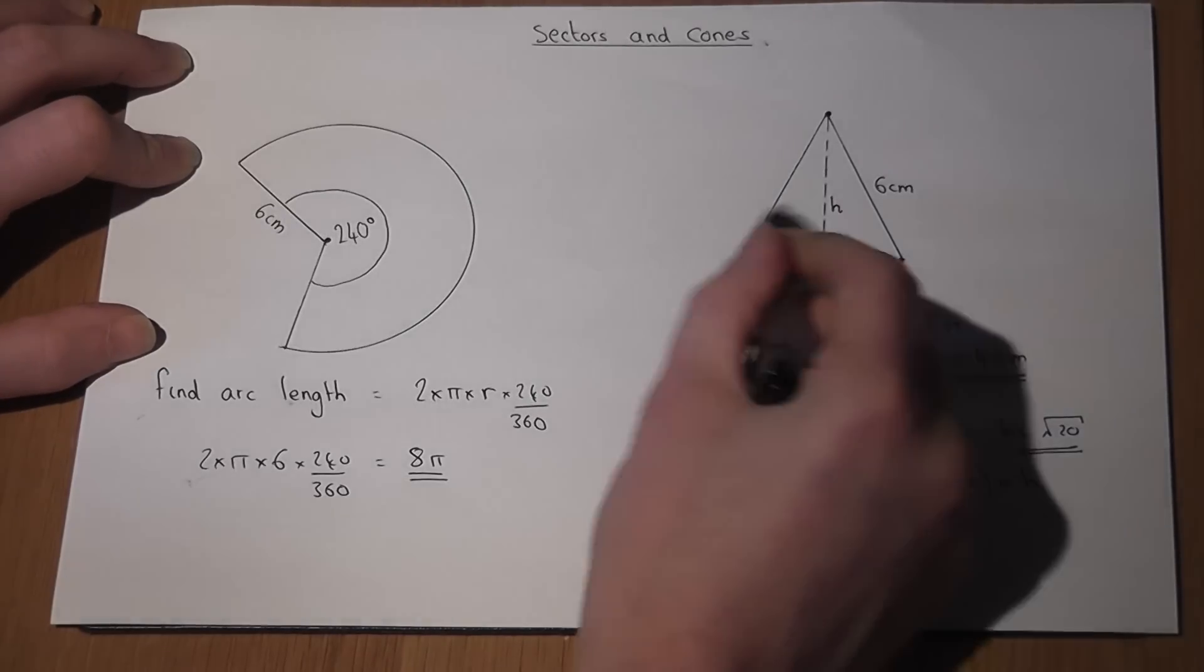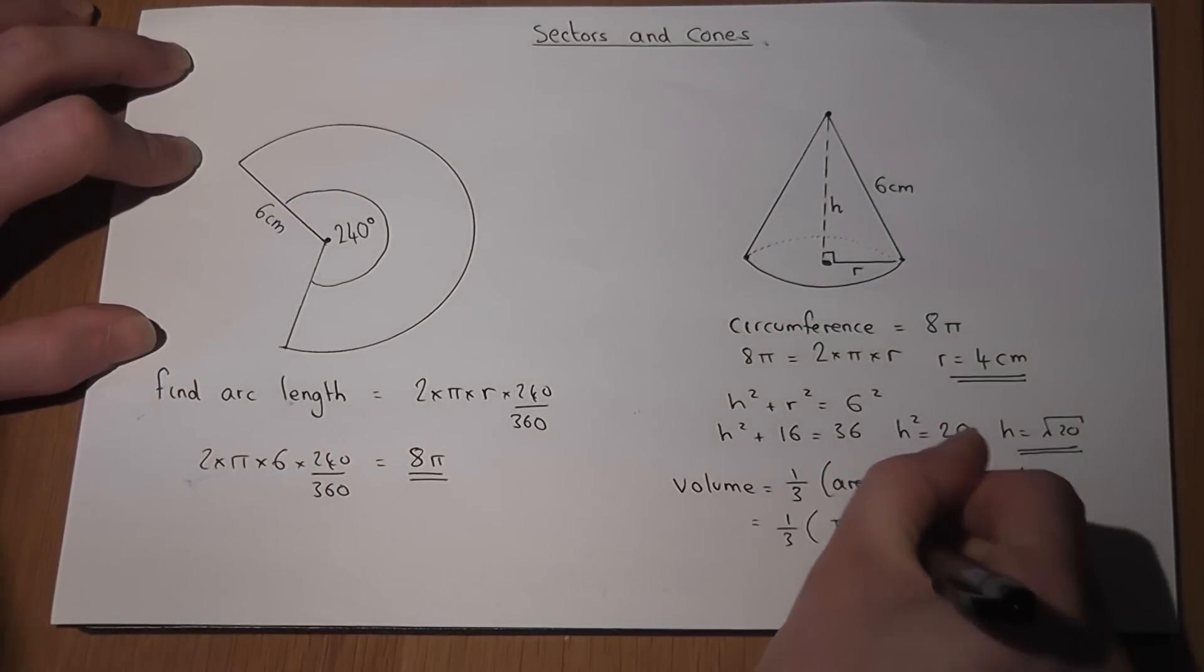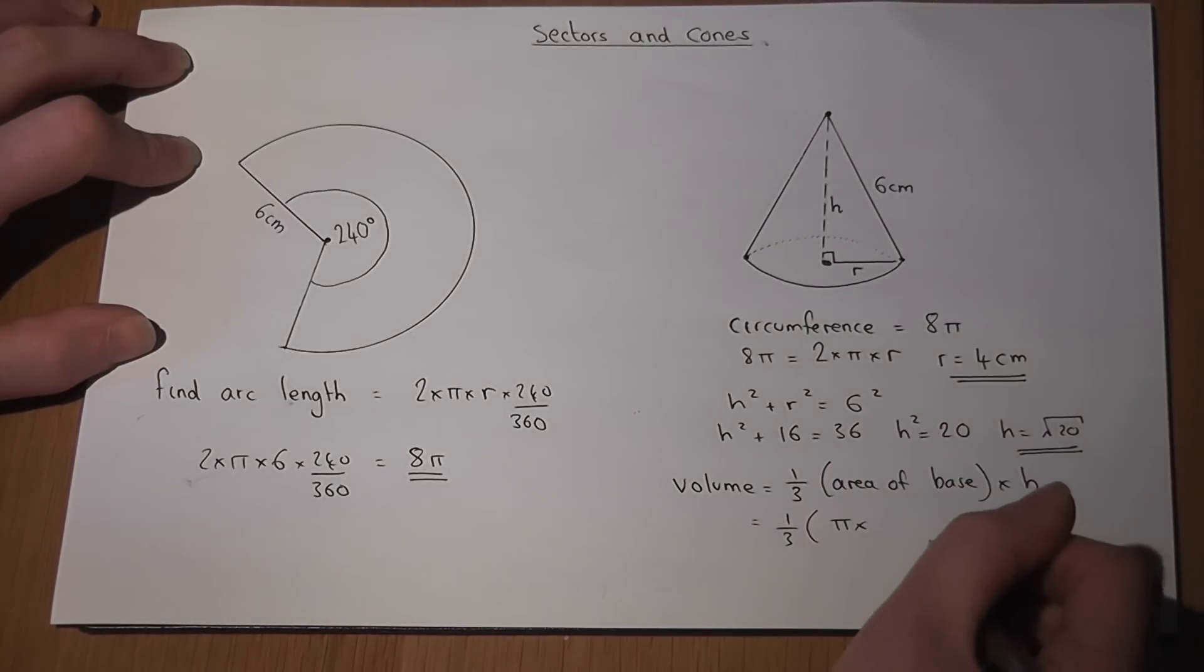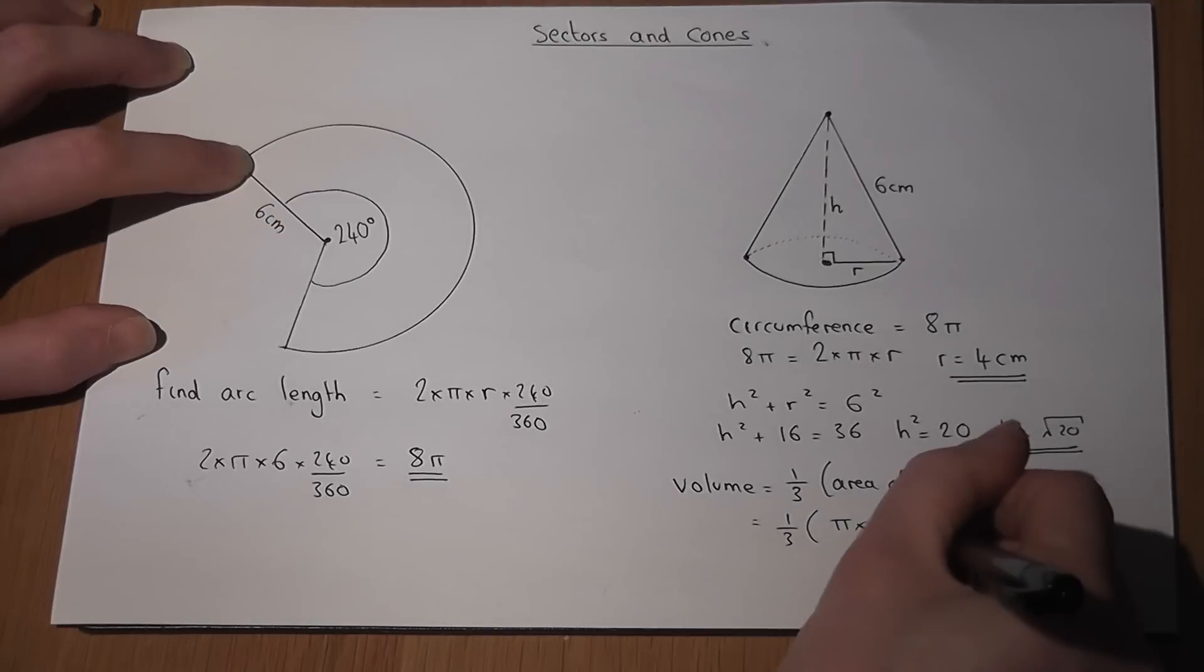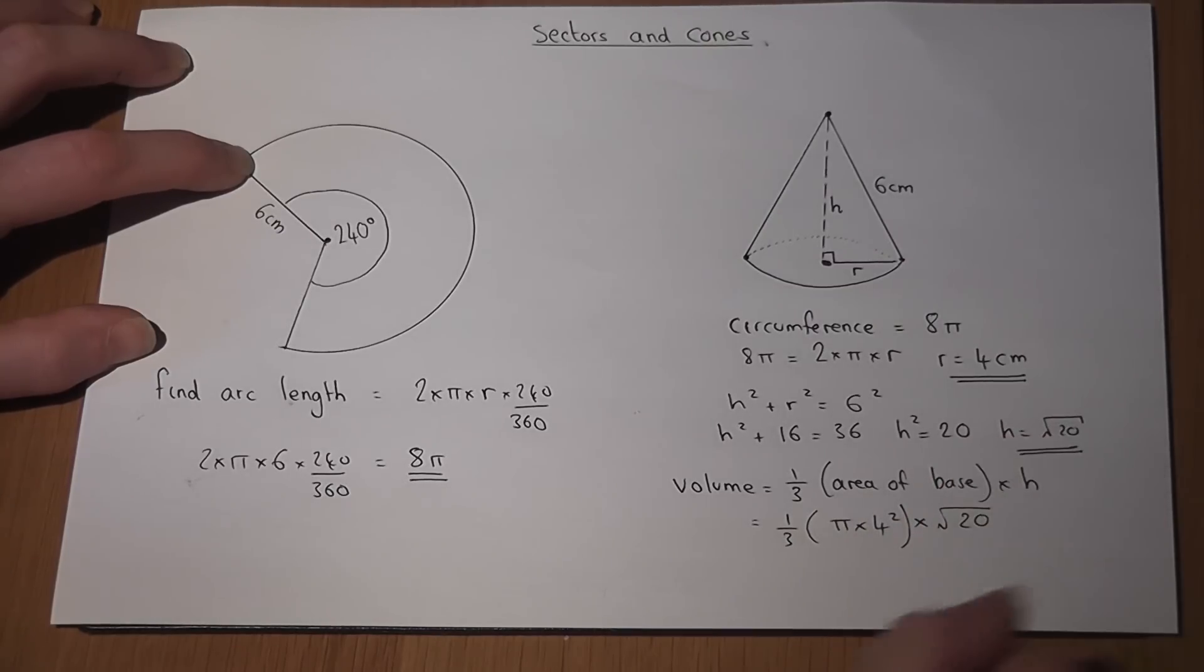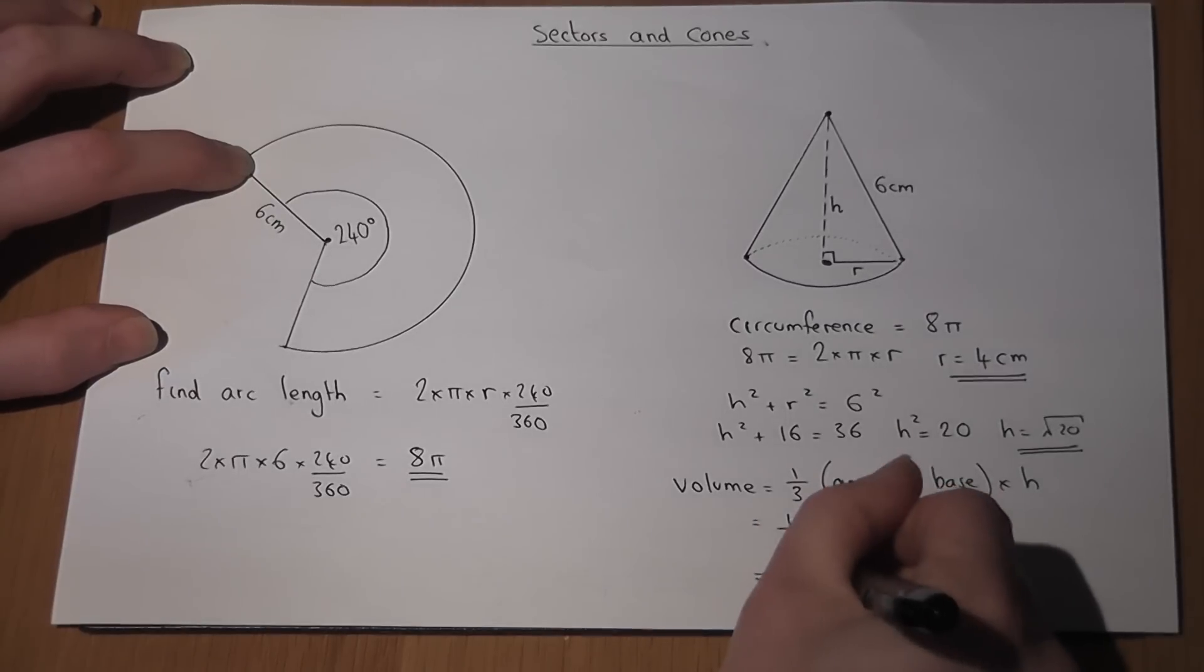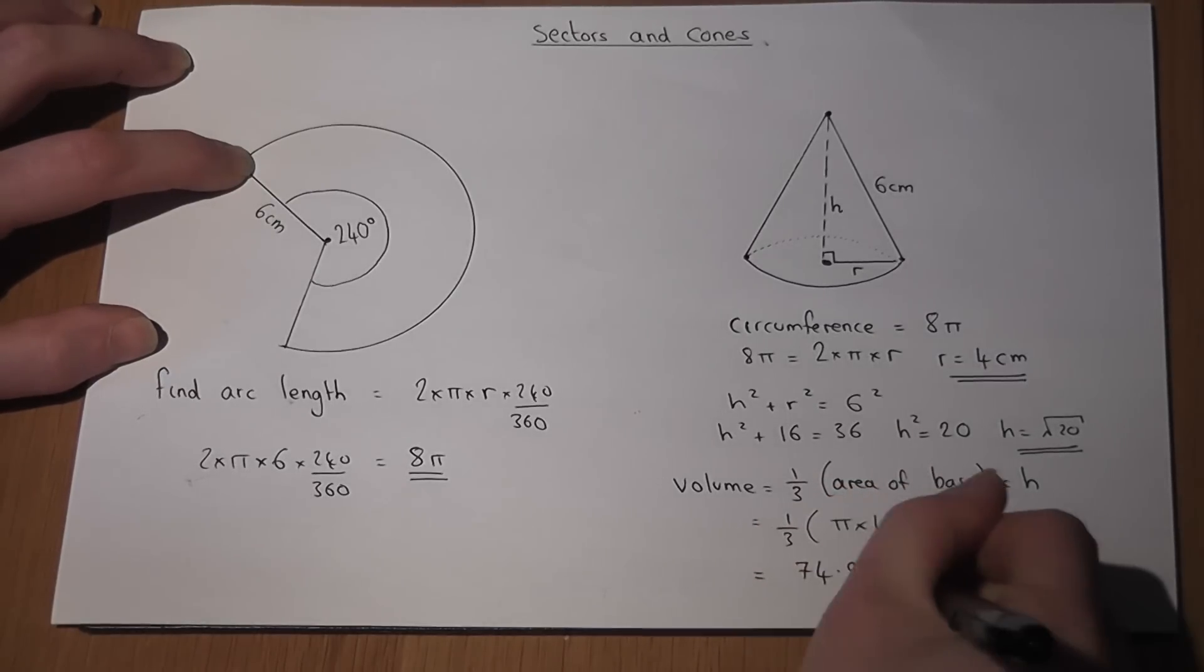The base is a circle, so it's pi times r squared. Well r is 4, so it's pi times 4 squared. And the height we worked out to be root of 20. So volume is just this calculation entered into the calculator, and we get 74.9 centimeters cubed.